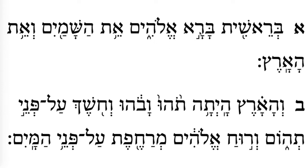These trope marks — this connector — indicate that bara, the action of creating, belongs to Elohim; he is the one that created. And Elohim has an etnachta, which says 'etnachta.' So this is 'bara Elohim.' From the beginning to the end of the clause, we say: Bereshit... bara Elohim.